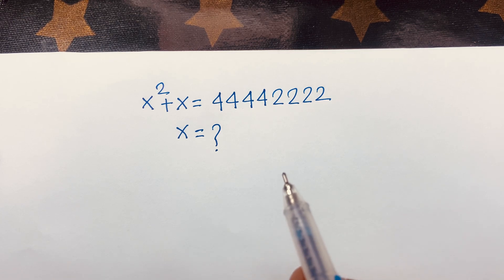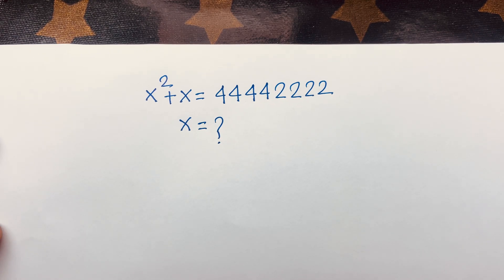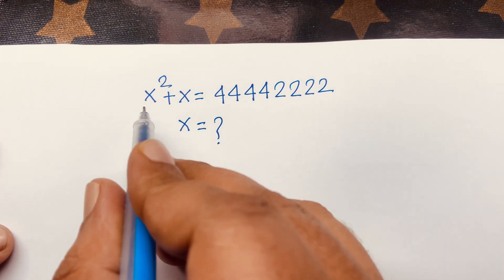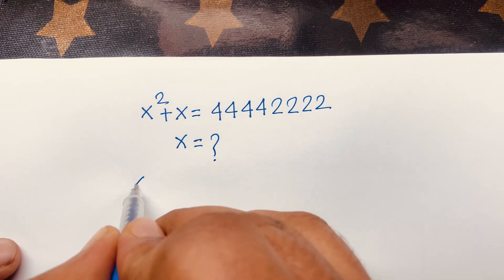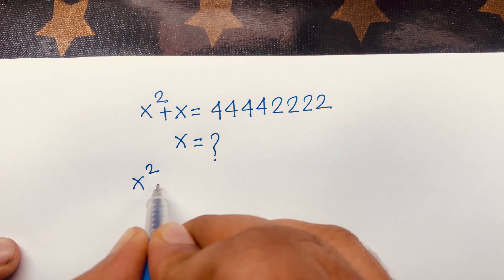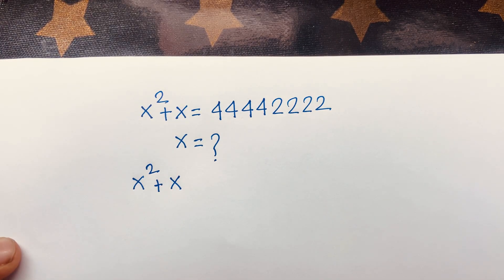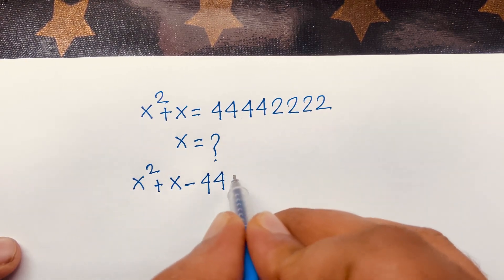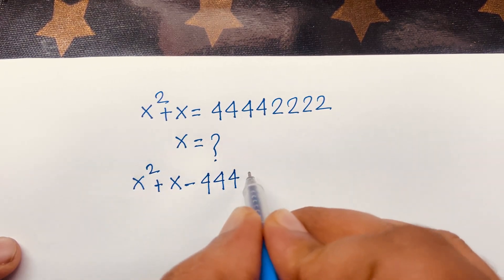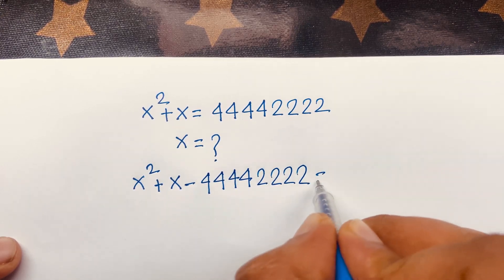First of all, I can see easily it is a quadratic equation. At this moment, this equation becomes x squared plus x, and if I move this term to this side, it will be minus 44442222 is equal to 0.